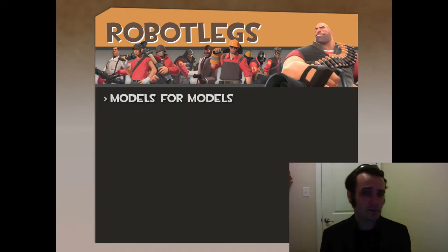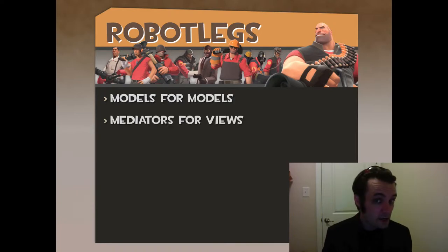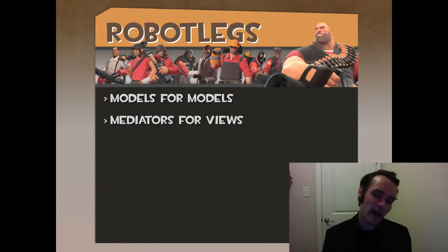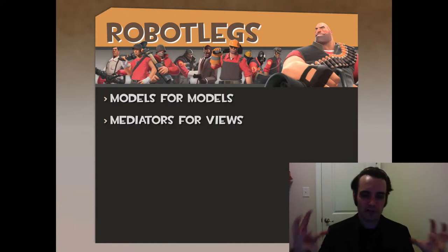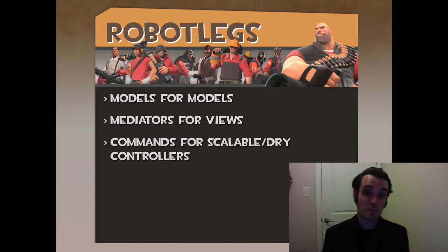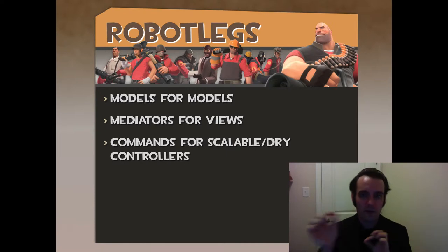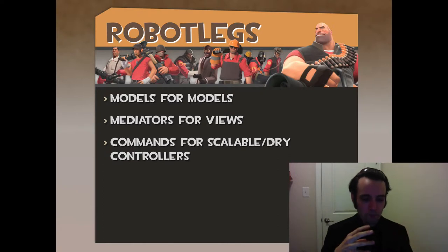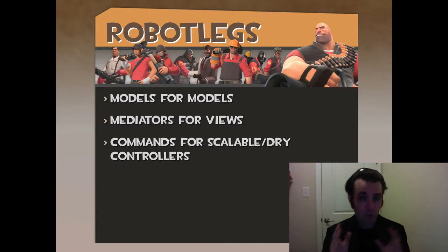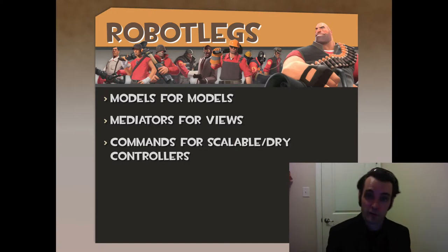Robot Legs has models — they're called models. Mediators are the views. If you're familiar with mediators in Backbone, it's very similar — it's like the mediator pattern. It allows views to talk to other views without direct coupling. Commands are for scalable, don't-repeat-yourself controller logic. Mediators often talk to models, but complex orchestrations involving asynchronous operations would be refactored into a command so everyone can reuse that logic in one place.